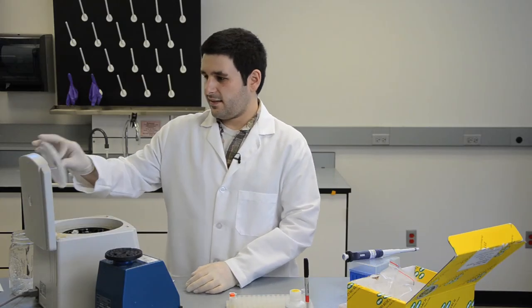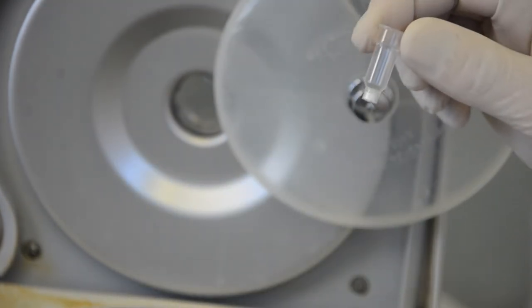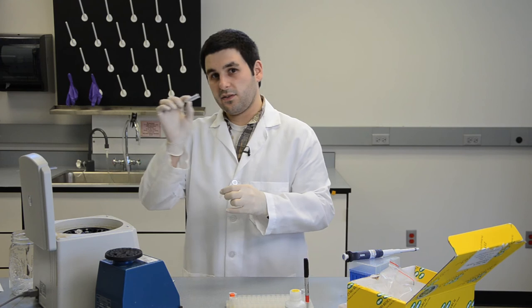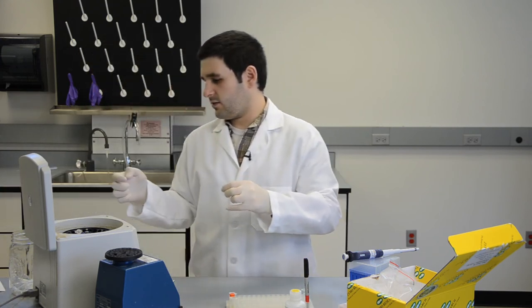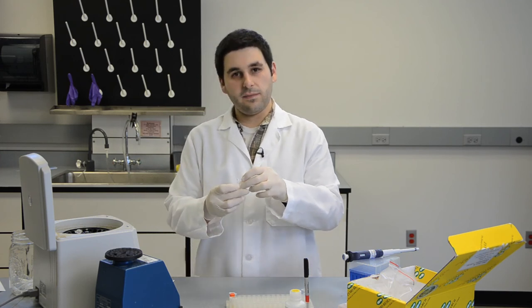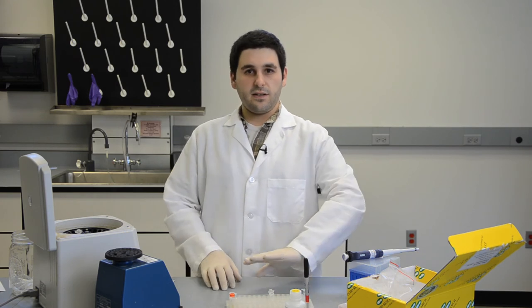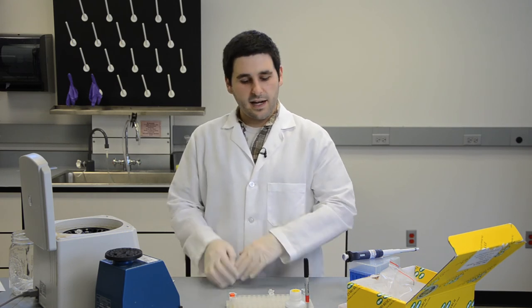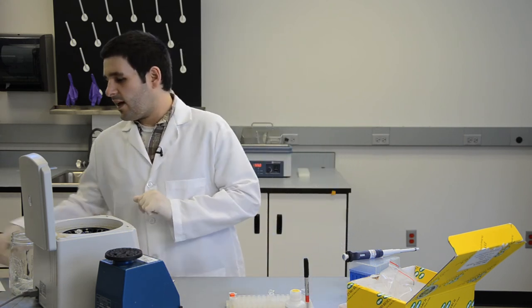Now that this final centrifugation step is complete, we want to discard the flow-through and discard this collection tube as well. Instead of returning it to a new one, you want to put it in a clean 1.5 ml Eppendorf tube. Now that we have all our DNA on there and it's clean, all we have to do is elute it into our final tube.